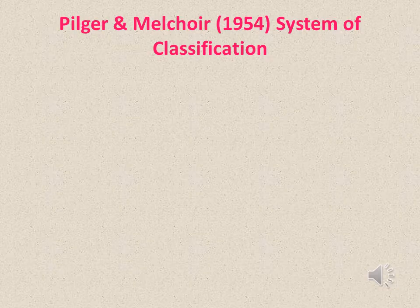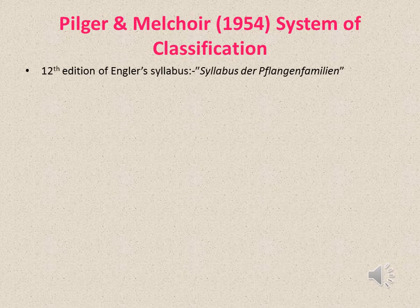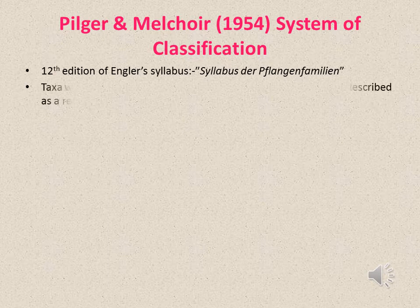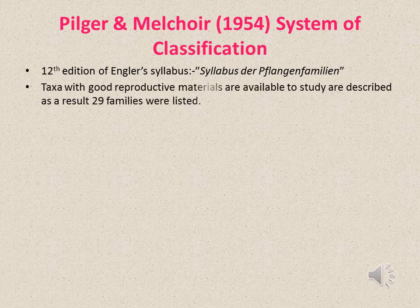Now we discuss Pilger and Melchoir's system of classification. This system was published in the 12th edition of Engler's syllabus, called Syllabus der Pflanzenfamilien. This was a complete system of Gymnosperm classification at that time. A total of 29 families were briefly described, with descriptions of only those taxa which had good reproductive material available for study.